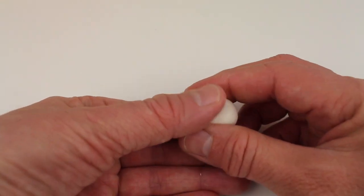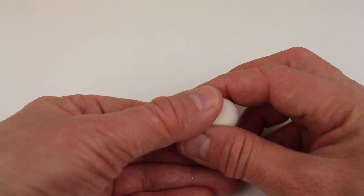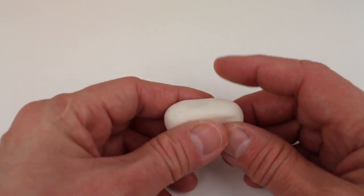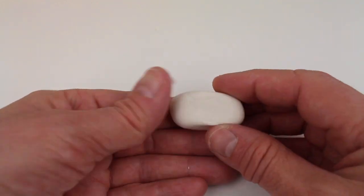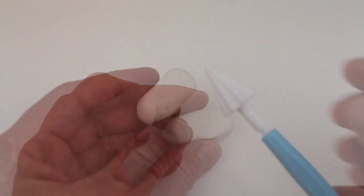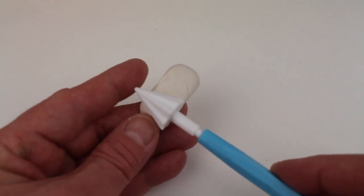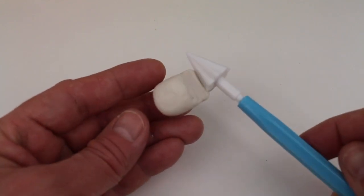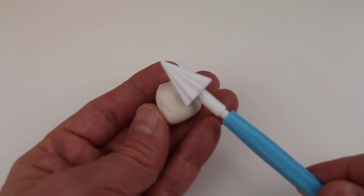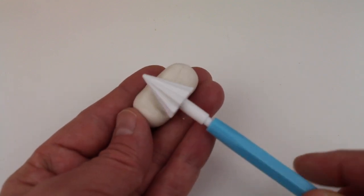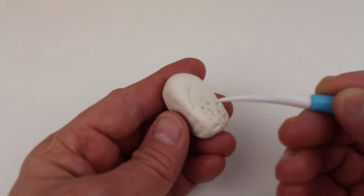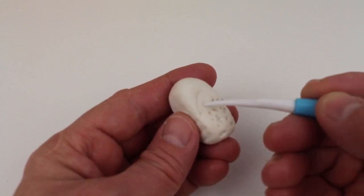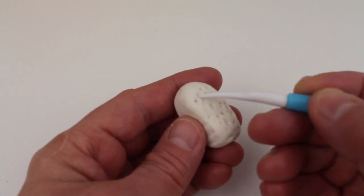Now let's make the toothbrush. First we'll make the bristles. I have some white play-doh. I'll use the decorating tool to make some lines and add texture to make it look like a toothbrush.